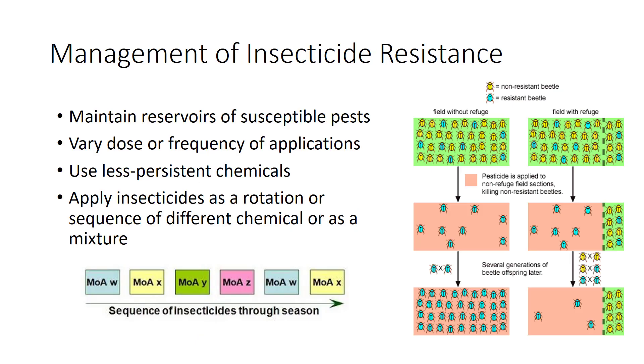Management of insecticide resistance requires a plan for controlled chemical use with the primary goals of avoiding or slowing down the development of resistant pest populations, causing resistant populations to revert to more susceptible levels, and causing resistance in natural enemies. Tactics include maintaining reservoirs of susceptible pest insects in refuges or through immigration from untreated areas to promote dilution of resistant genes, varying the dose or frequency of insecticide applications, using less persistent chemicals, and applying insecticides as a rotation or sequence of different chemicals or as a mixture.